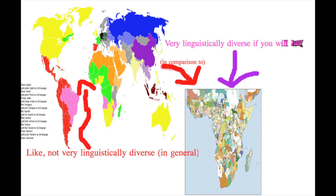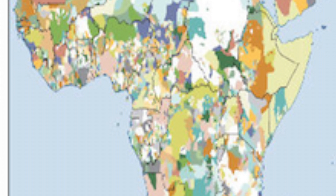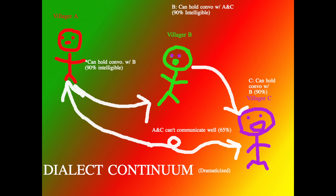Isn't it just so linguistically diverse? There's actually about 2,500 languages spoken on the African continent, give or take a few hundred for regional dialects — no big deal — it's just the most ethno-linguistically diverse continent on earth.